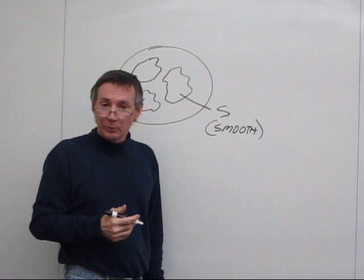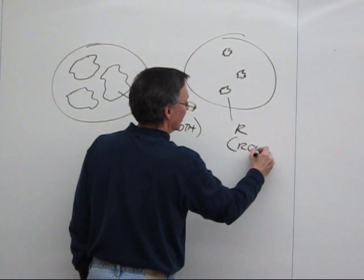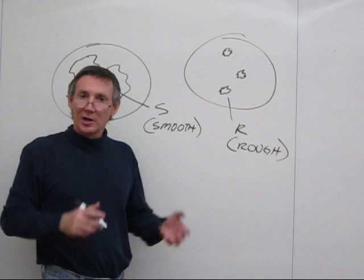We refer to these as S for smooth colonies. These are the typical ones. What Griffith found was that every once in a while you'd get a culture where you'd get instead these little dry, rough-looking colonies, R for rough. And these cells lack the polysaccharide slime on the outside of the cell.